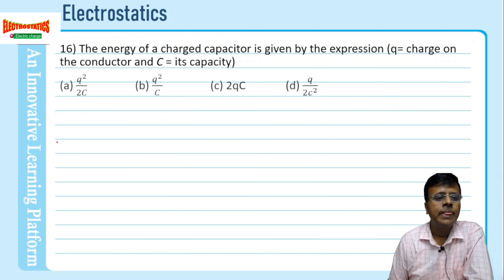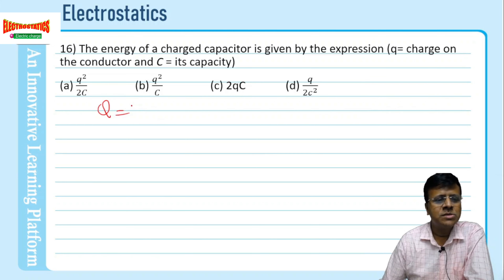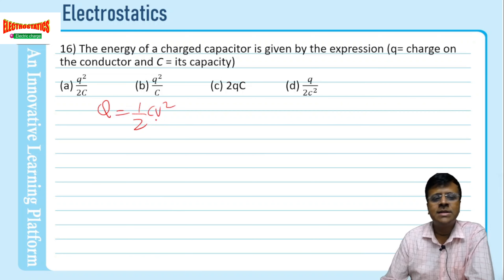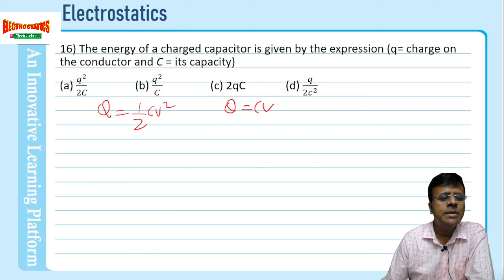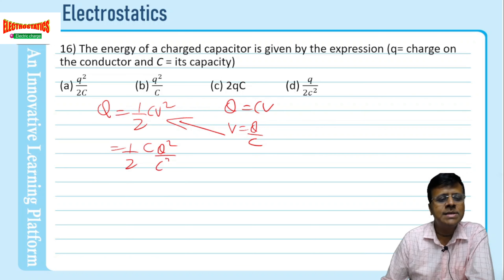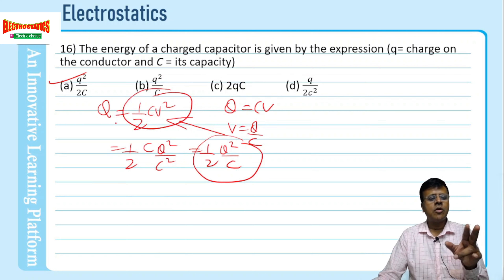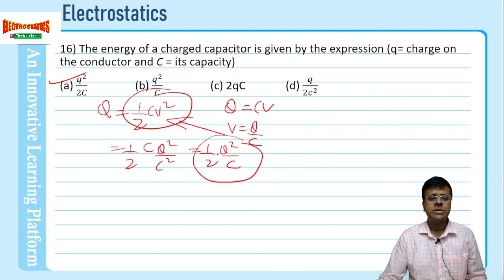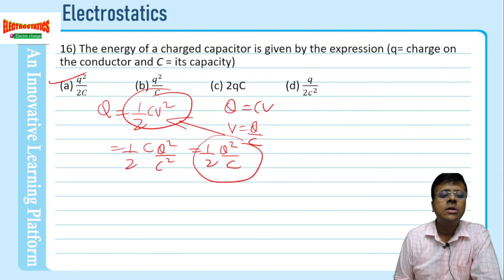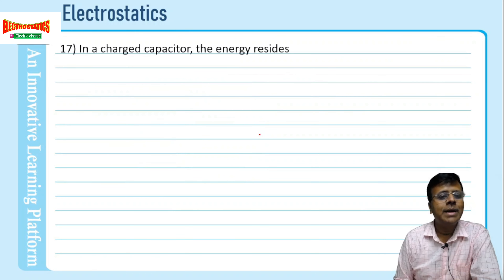Problem 16: The energy of a charged capacitor. This is a direct formula-based question. If you remember ½CV², and use V = q/C, then substituting gives ½C·(q/C)² = q²/2C. There are three formats: in terms of C and V, in terms of q and C, and in terms of q and V. You can memorize all three, but working through derivations makes them automatic.